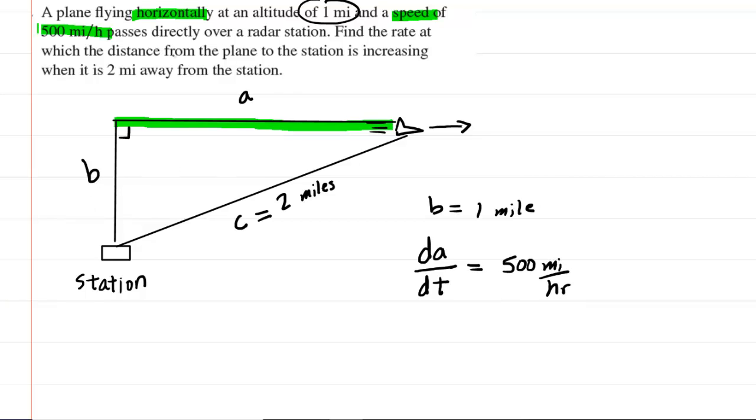Notice that because the airplane is flying horizontally, that this vertical distance right here would not increase in length, nor would it decrease in length. And what that means is that the rate of change of the side marked B is equal to 0, so that we can write as db/dt is equal to 0 miles per hour.